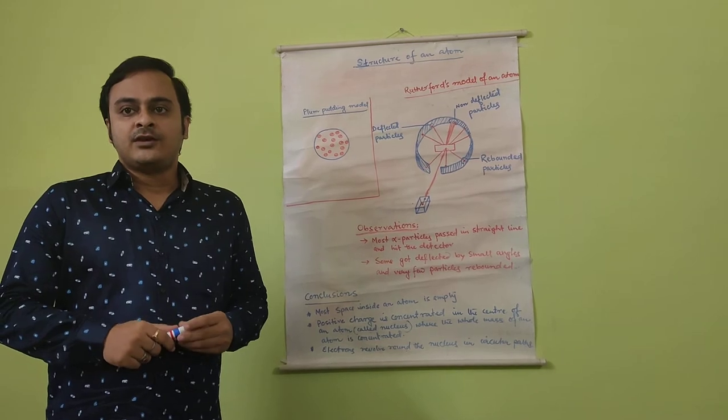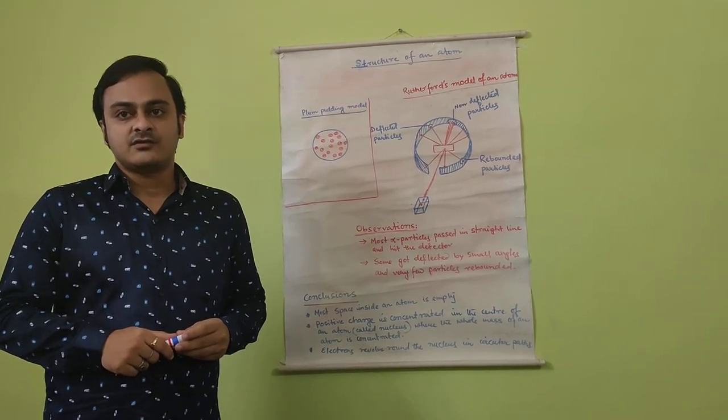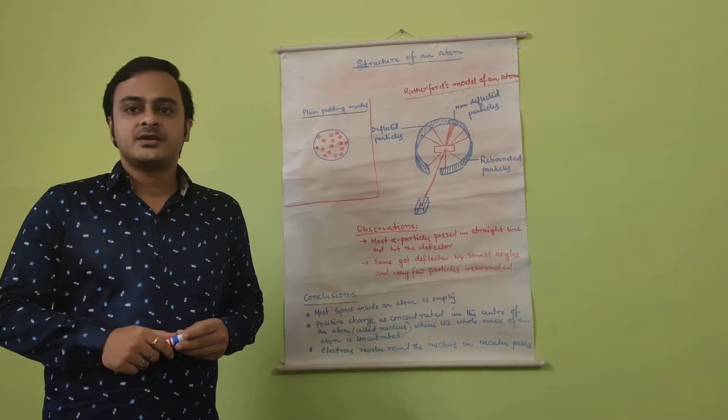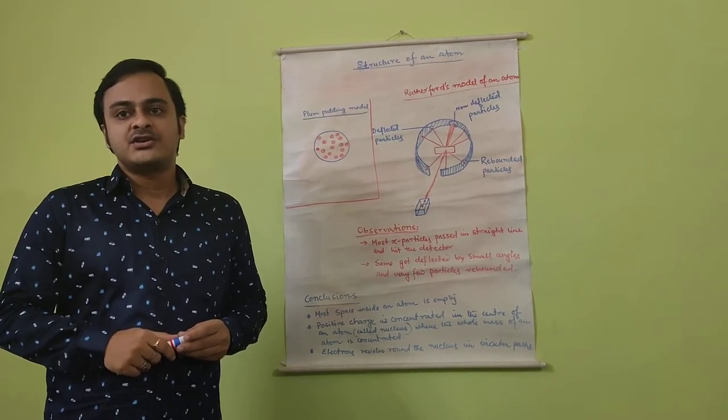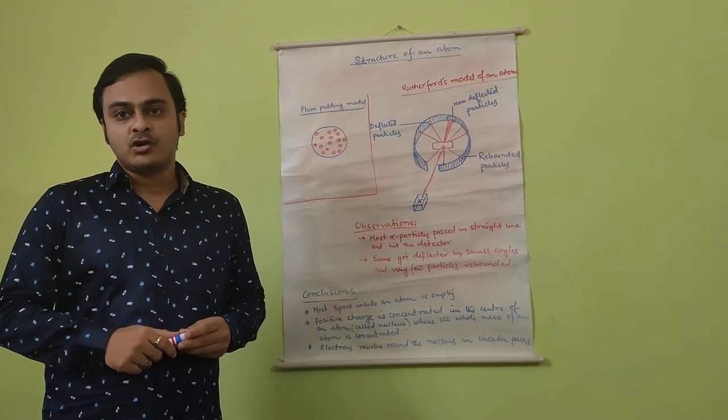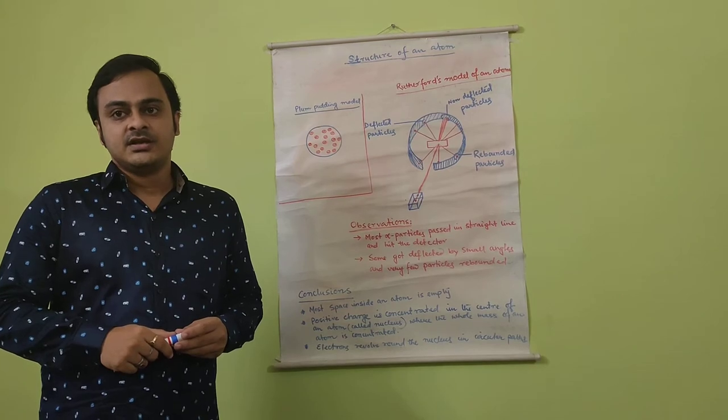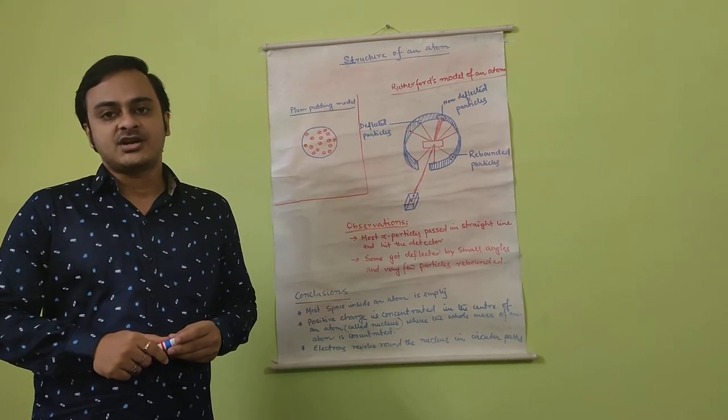The Plum Pudding model of an atom was one of the most widely accepted models for understanding the structure of an atom. However, several experiments performed by scientists to study atomic structure showed interestingly different results, thereby contradicting the Plum Pudding model discovered by J.J. Thompson. This led many scientists to reconsider the structure of an atom and study it again.